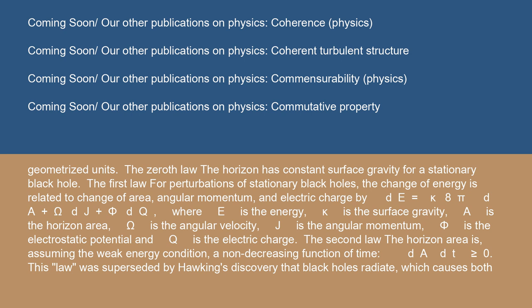Where E is the energy, κ is the surface gravity, A is the horizon area, Ω is the angular velocity, J is the angular momentum, Φ is the electrostatic potential, and Q is the electric charge.